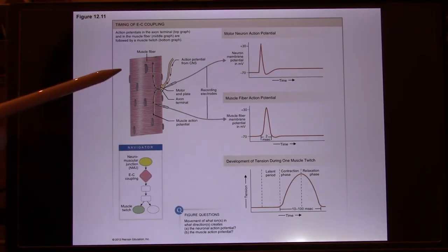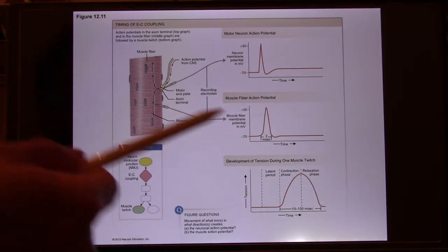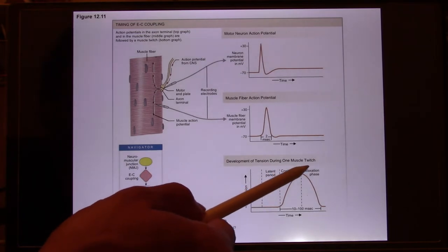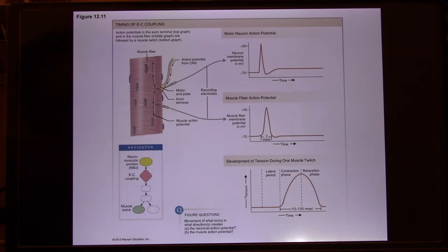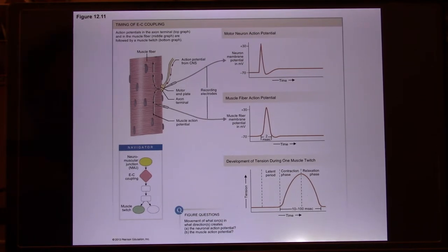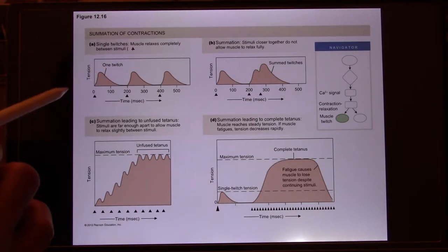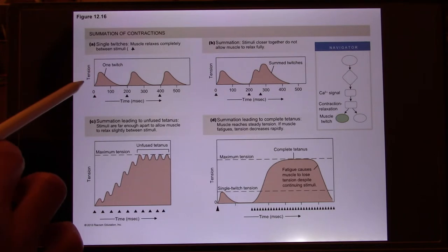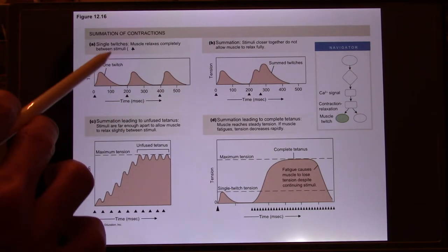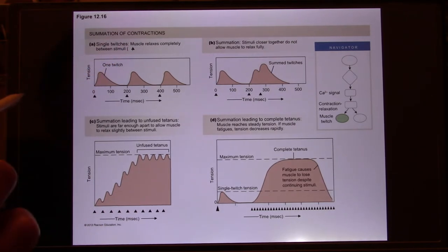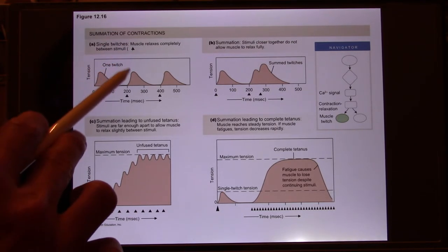During EC coupling you have the contraction phase and relaxation phase. These whole events take about 40 to 100 milliseconds. If you only have low-intensity muscle contraction, it's not a problem — they call it one muscle twitch. A muscle twitch is one contraction-relaxation cycle. That's not a problem.